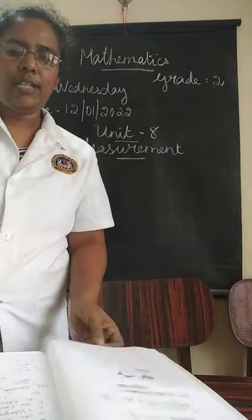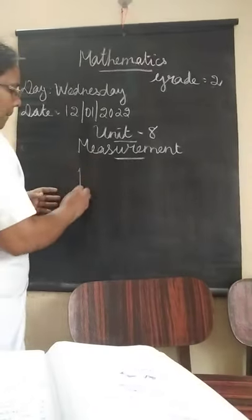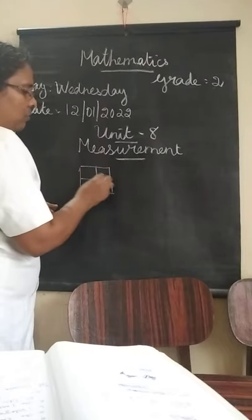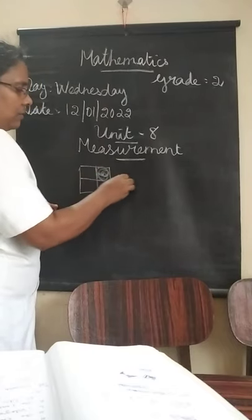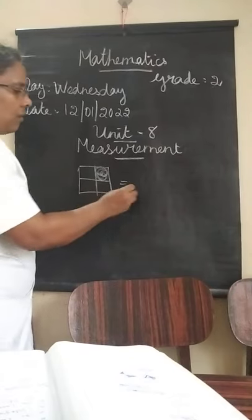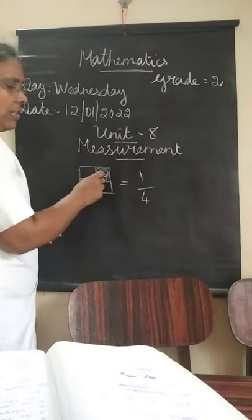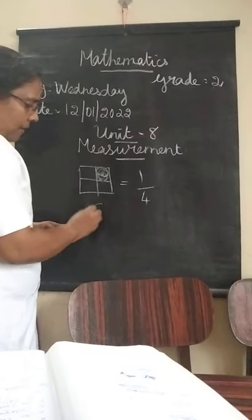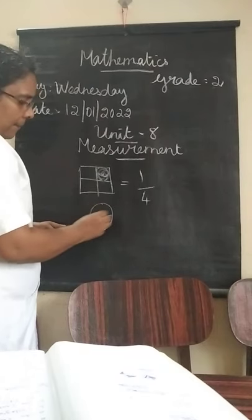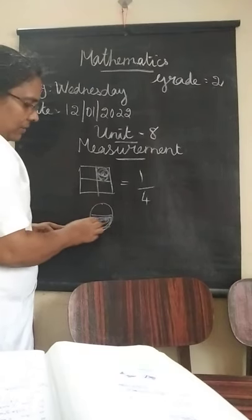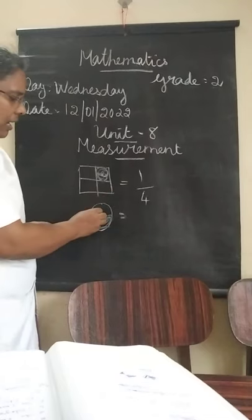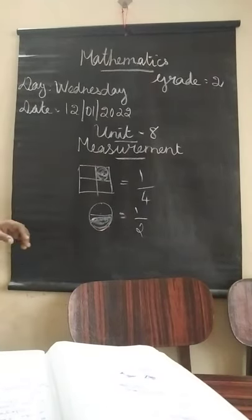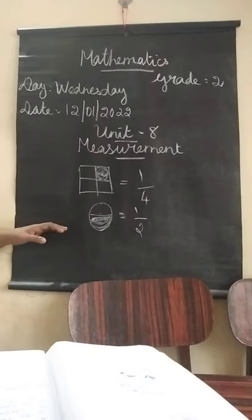Shall I ask one or two questions? Write the fraction for the shaded part. What is the answer for this? Here total four parts, one part shaded. And one more question: here total two parts, one part shaded. Do you understand this?